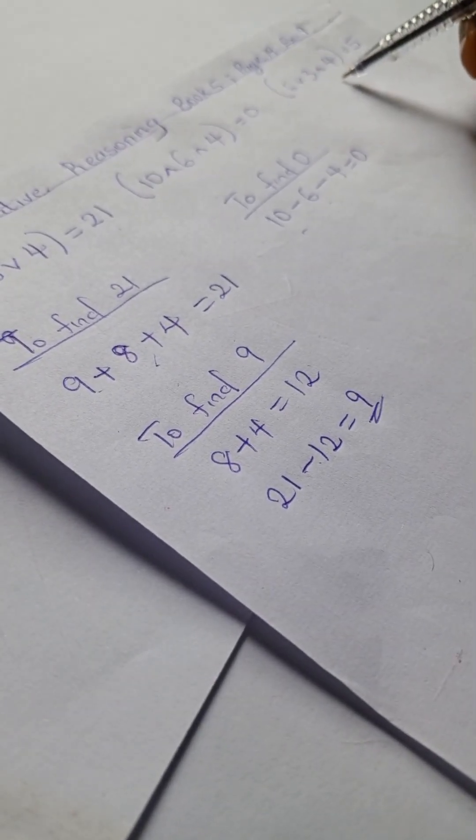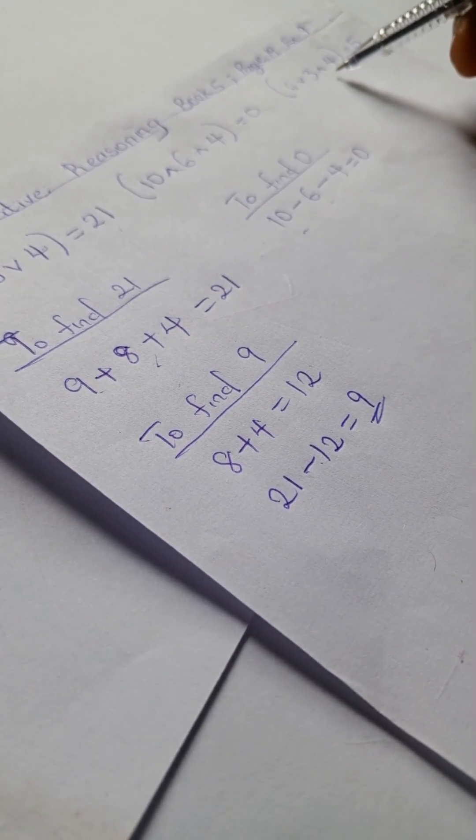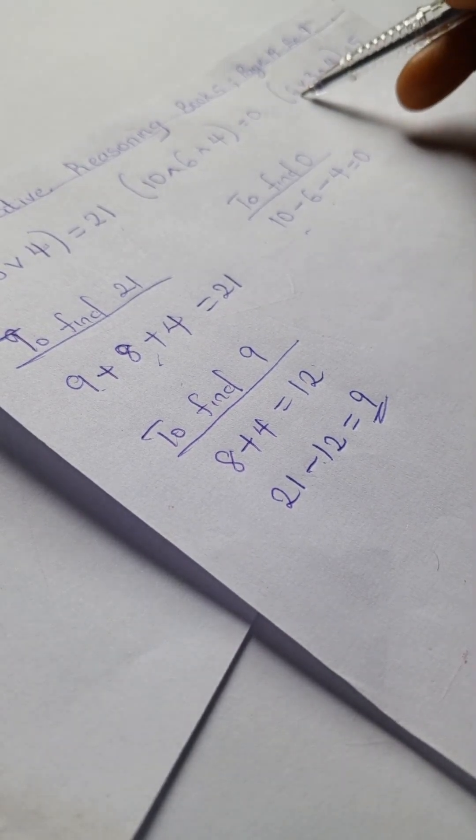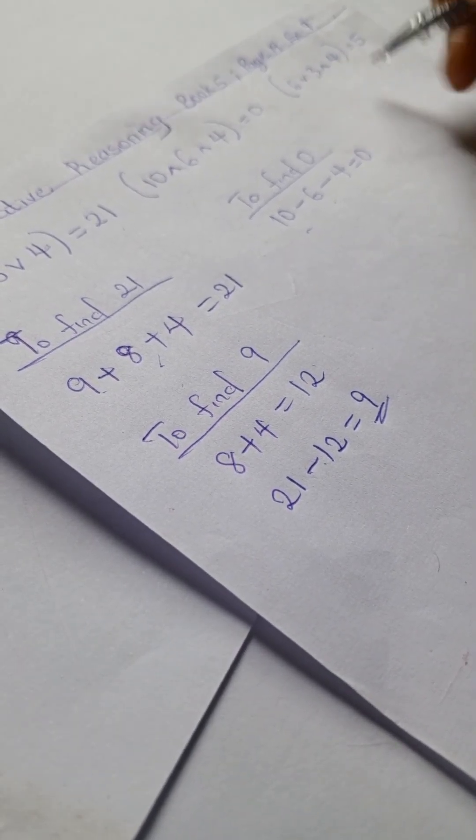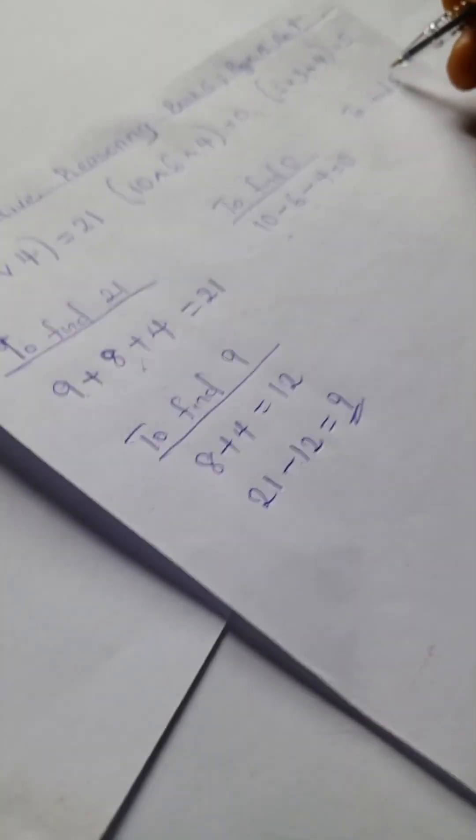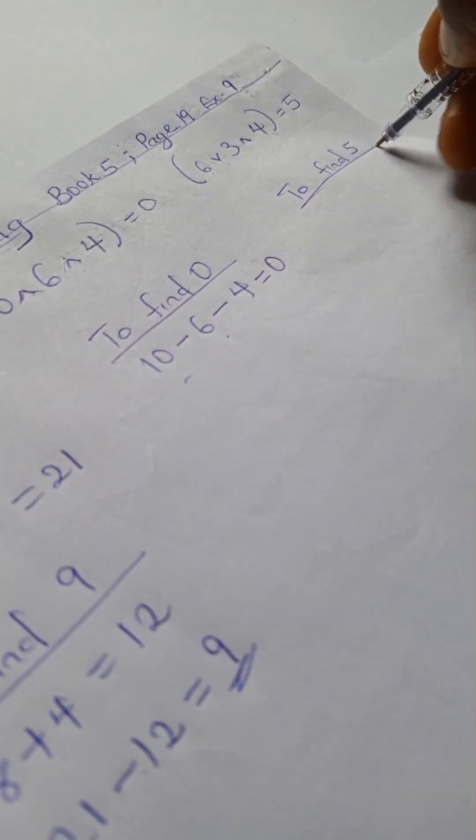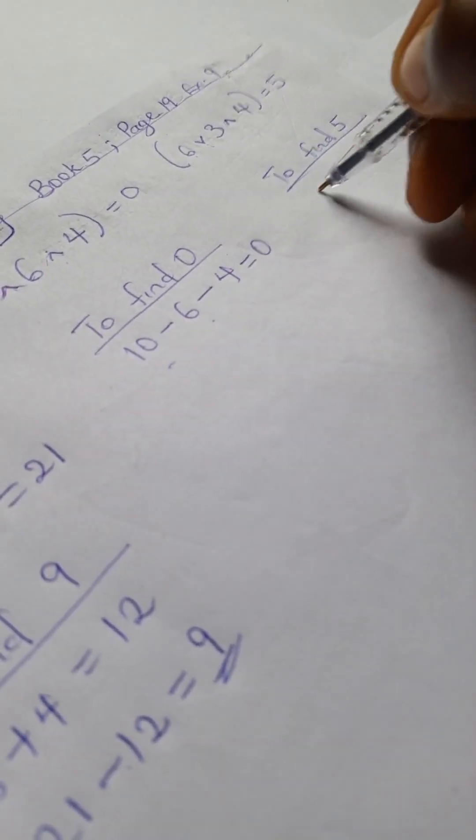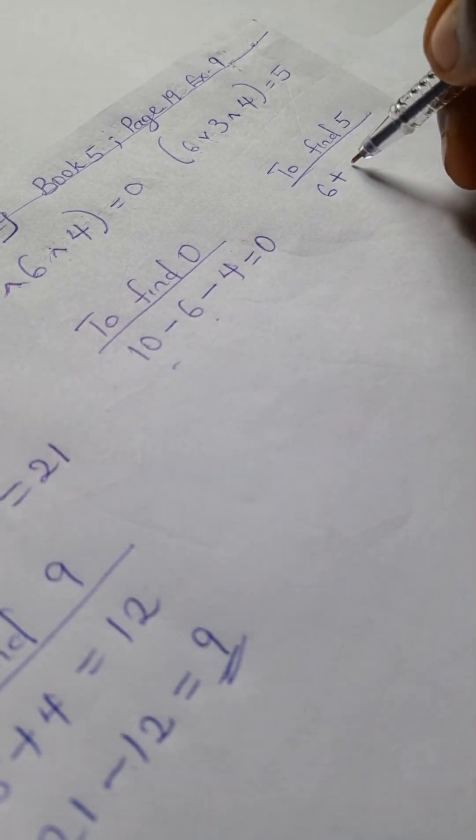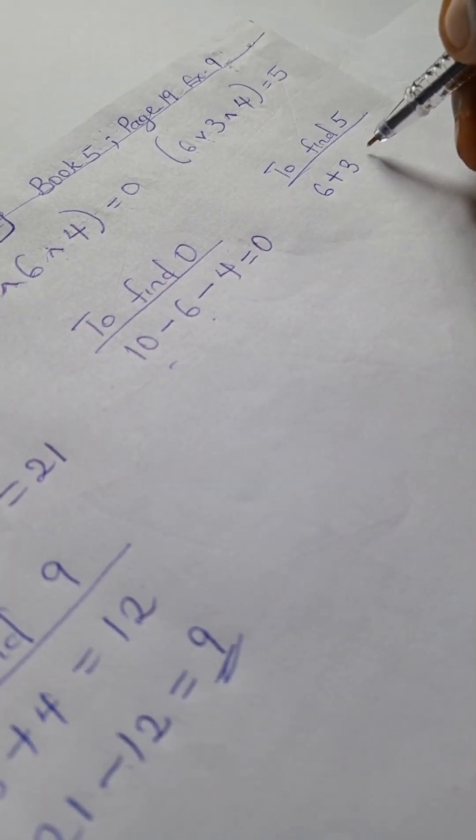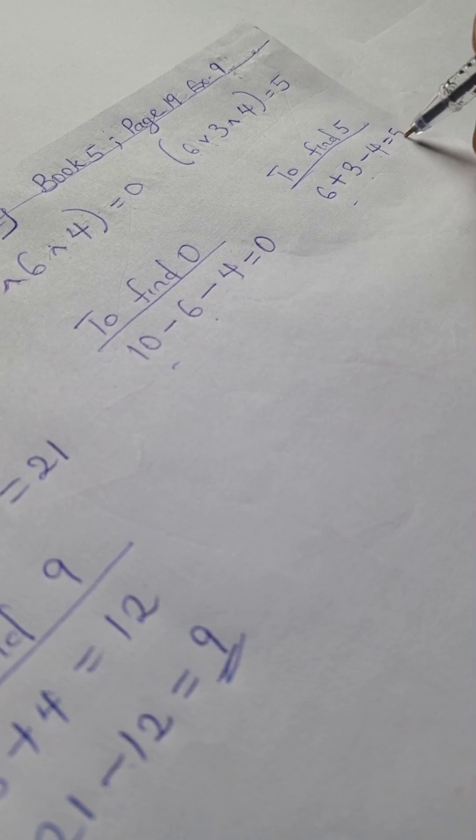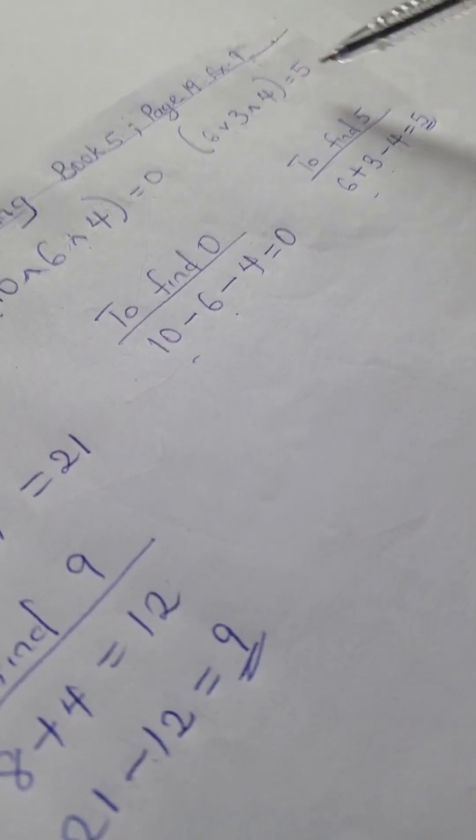And to find this, this is a combination of both signs. So here we have 6 plus... to find 5, we're going to have 6 plus 3 minus 4. So 6 plus 3 is 9, 9 minus 4 is 5. So at any point you want to find any of the numbers, you just simply reverse it.